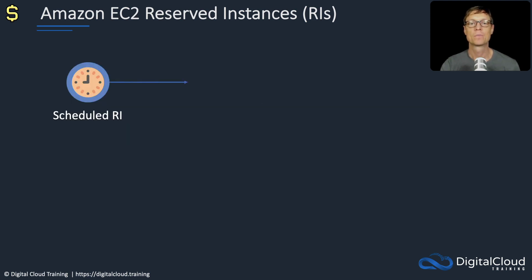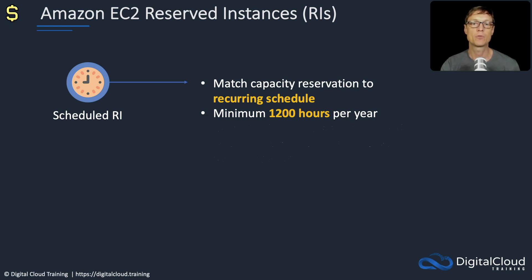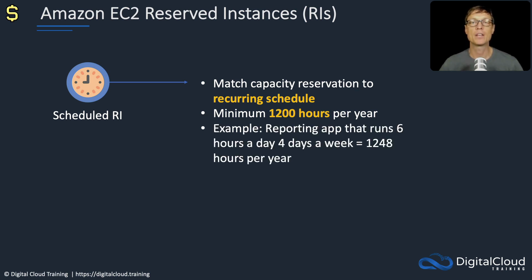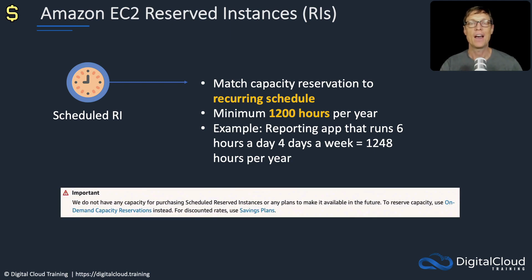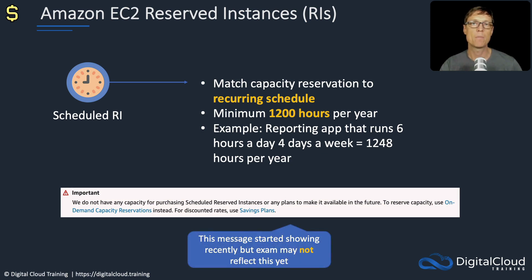Let's look at the scheduled RI. This is where you match a capacity reservation to a recurring schedule, with a minimum of 1,200 hours per year. For example, a reporting application that runs six hours a day, four days a week, would be 1,248 hours per year — you pay for that and get your reserved instance discount. Note: AWS recently indicated they no longer have capacity for purchasing scheduled reserved instances, though exam questions may not yet reflect this change.